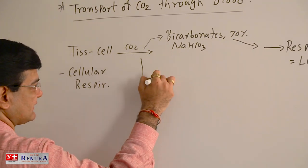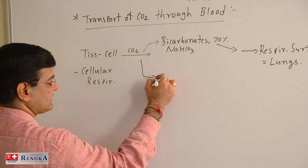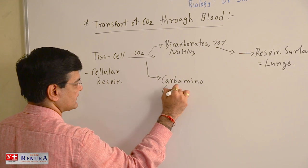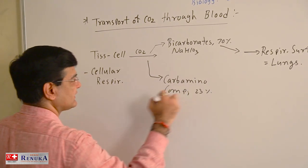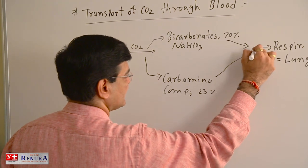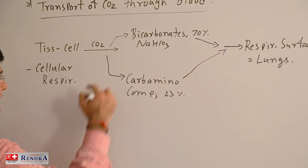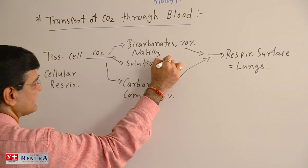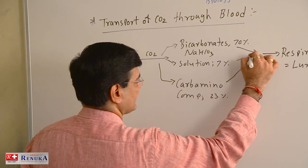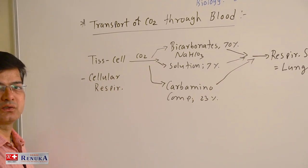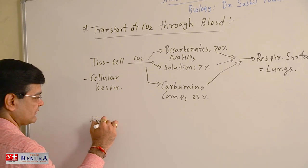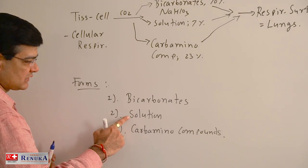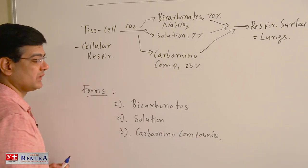Nearly 23% of carbon dioxide is transported in the form of carbamino compounds towards the respiratory surface. In the form of solution, nearly 7% of carbon dioxide is transported. So the three forms of CO2 transport are: bicarbonate form, solution form, and carbamino compound form.